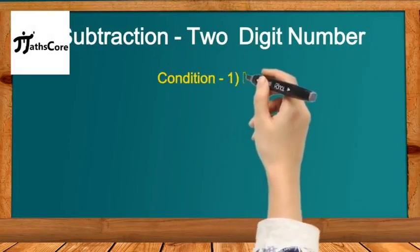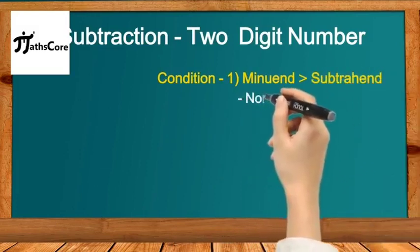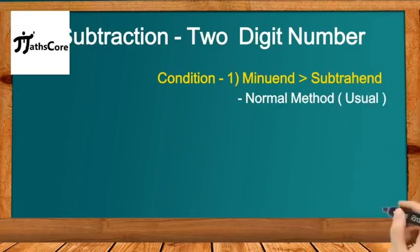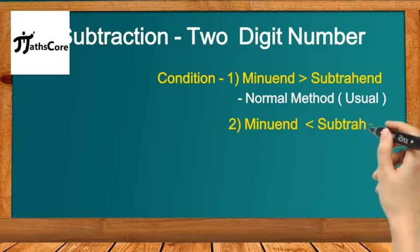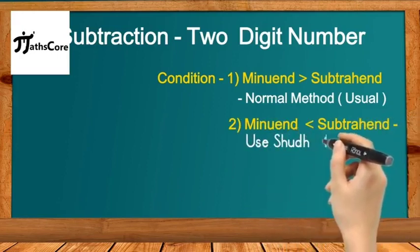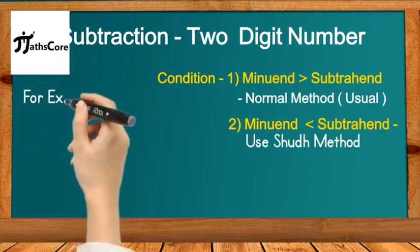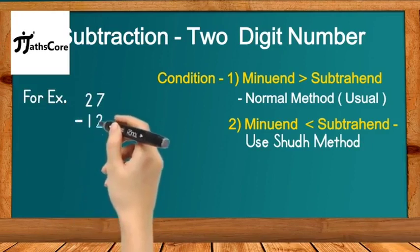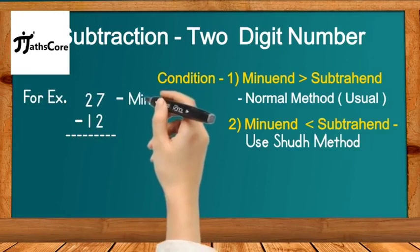Let us start with subtraction of two digit numbers. We need to follow two conditions. First, if the minuend is greater than the subtrahend, solve the example using the normal method learned in school. Second, if the minuend is less than the subtrahend, solve using the Vedic math method known as subtraction by Shud method.